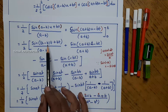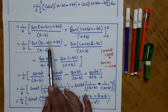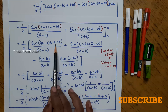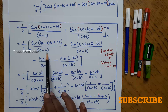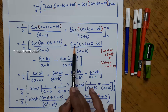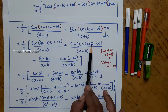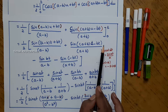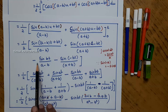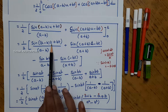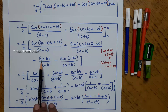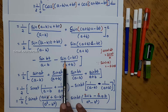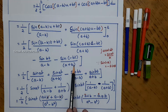Now, applying the upper limit, substituting u equals t: sin((a minus b)t plus bt) divided by (a minus b) plus sin((a plus b)t minus bt) divided by (a plus b). Now applying the lower limit, substituting u equals 0: sin(bt) divided by (a minus b) minus sin(minus bt) divided by (a plus b).